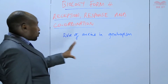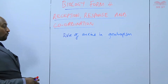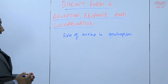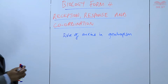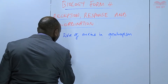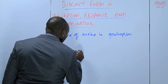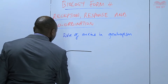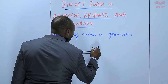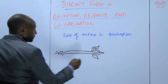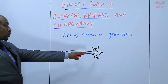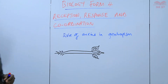We are going to have a scenario here of a young shoot or young seedling. We shall place it in a horizontal manner. So we have the side of the root and the side of the shoot — that is a young seedling placed in a horizontal position.